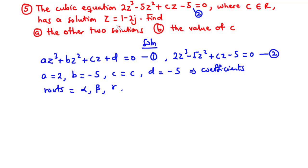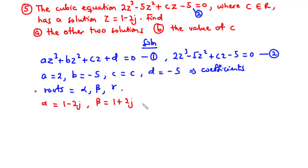If a cubic equation has 2 complex roots, one is the complex conjugate of the other. So given that one complex root is 1 minus 2j, the second complex root is 1 plus 2j — its complex conjugate. We can assign alpha equals 1 minus 2j and beta equals 1 plus 2j, leaving us to find the value of gamma, which is the real root.